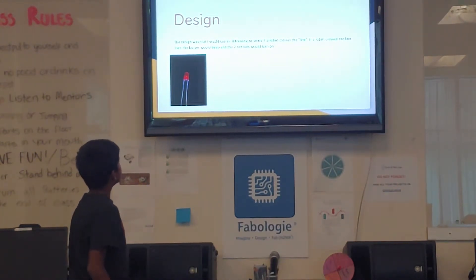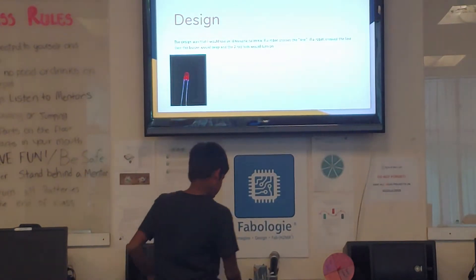Design. The design was that I would use an ultrasonic sensor to detect a robot crossing the line. If a robot crossed the line, the buzzer would go off and the two red LEDs would turn on.